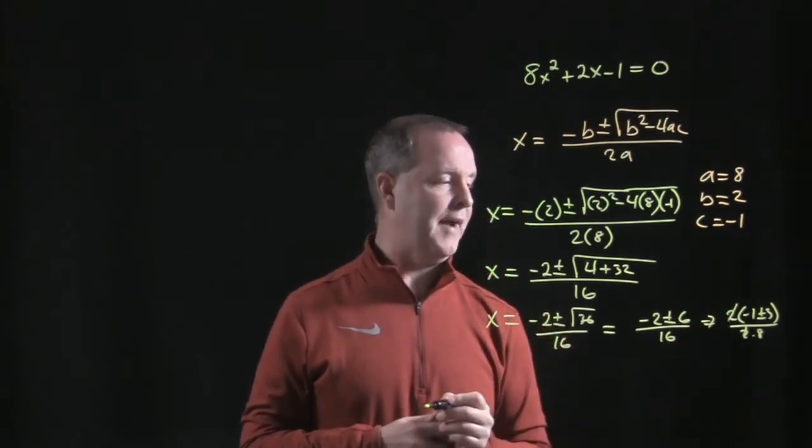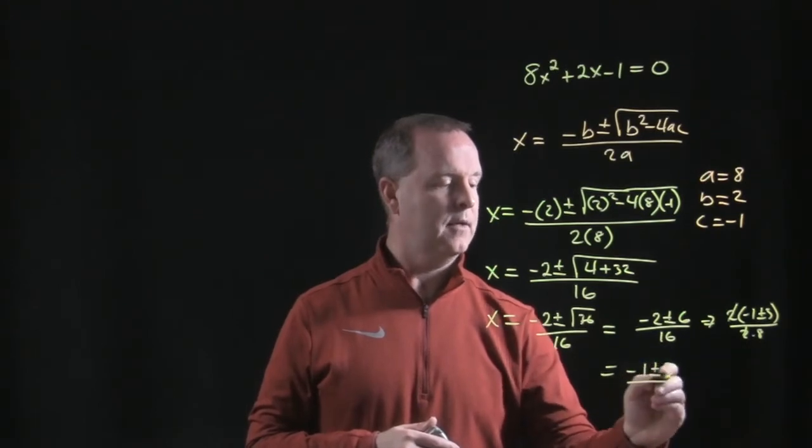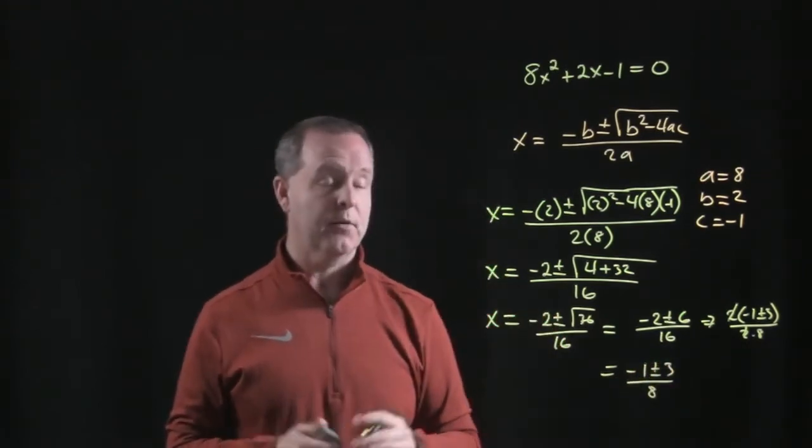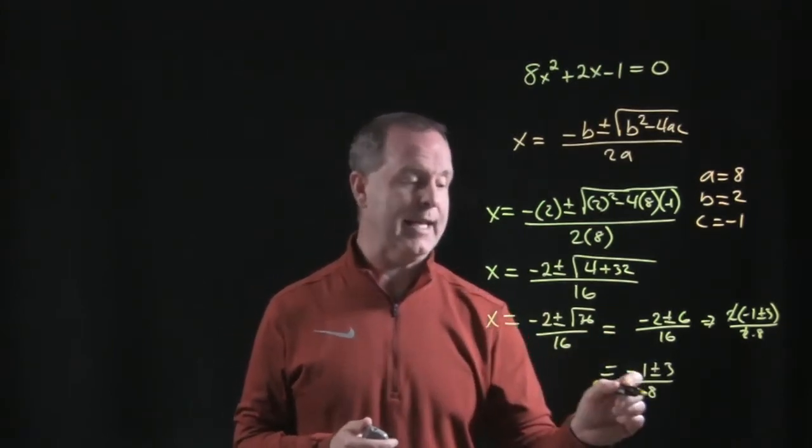Those 2's cancel, or factor out. So I'm left with minus 1, plus or minus 3, all over an 8. Those are my two solutions, but more precisely, let's figure out exactly what each version is.